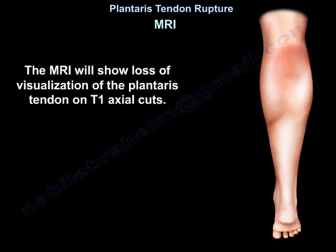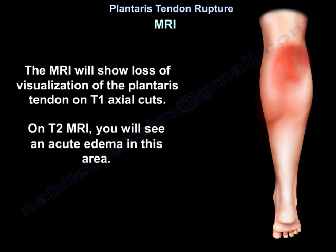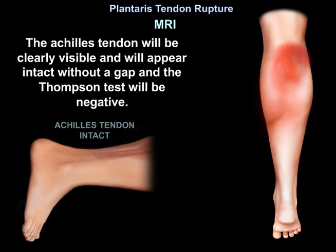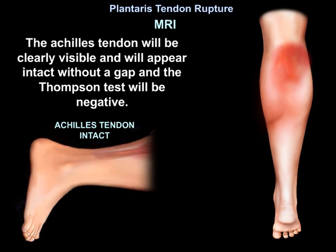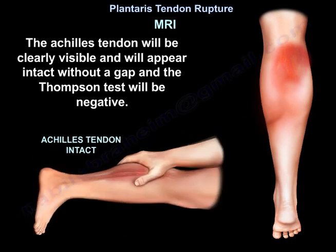The MRI will show loss of visualization of the plantaris tendon on T1 axial cuts. On T2, you will see acute edema in this area. The Achilles tendon will be clearly visible and will appear intact without a gap, and the Thompson test will be negative.